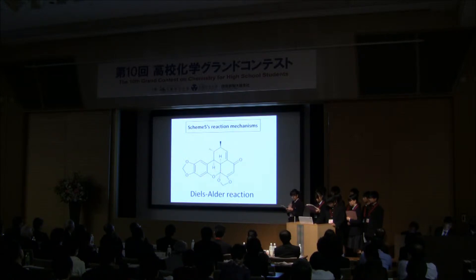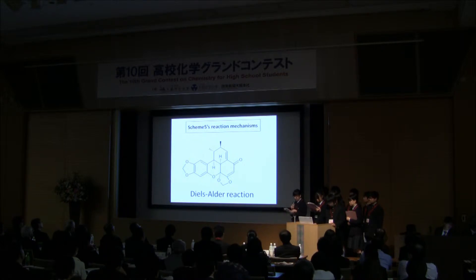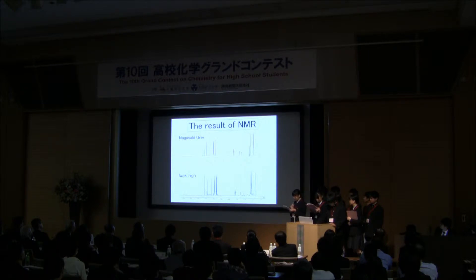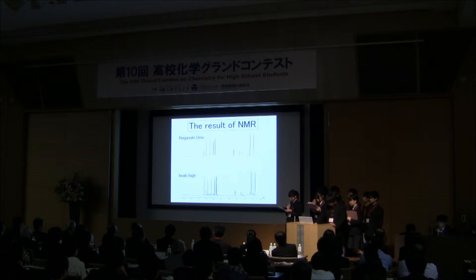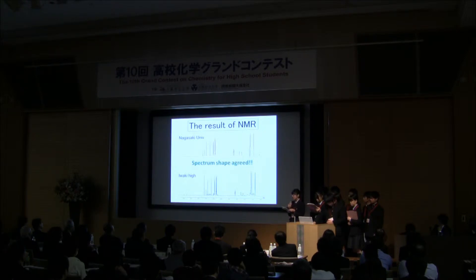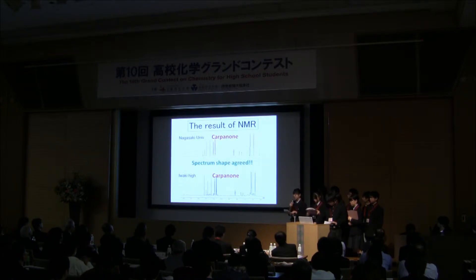At the first four schemes, we measured melting points of the substances we got so that we could identify what substances we obtained. At the fifth scheme, we used H1-NMR and measured the spectrum of the substances we got. It perfectly matched the spectrum of carbanol synthesized by the Pharmacy Department of Nagasaki University, which made us convinced we certainly achieved the total synthesis of carbanol.